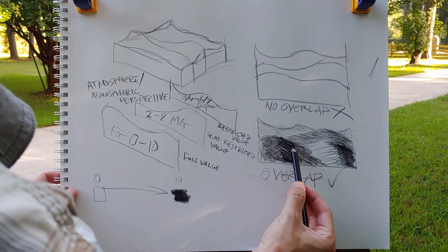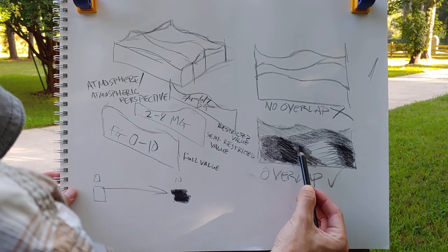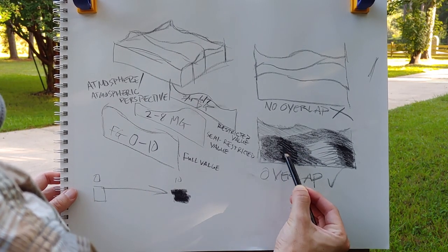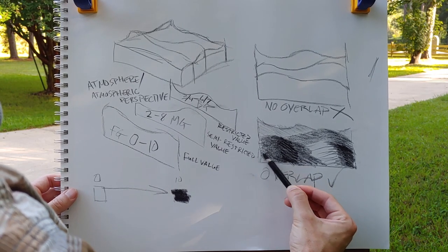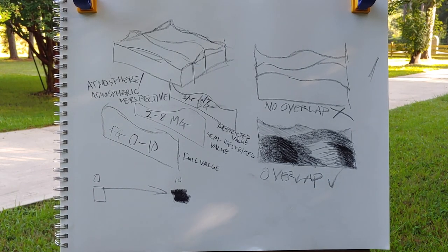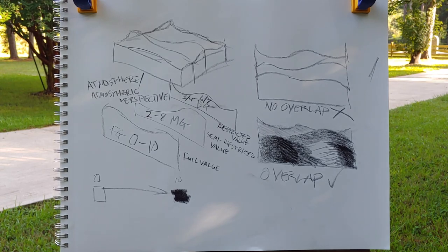So this is the simplest way to break down a landscape. If you're able to use these notes, break things down into foreground, middle ground, and background, and logically develop the values, you'll have a successful landscape.